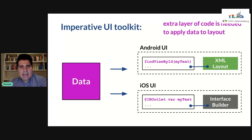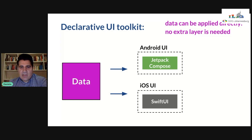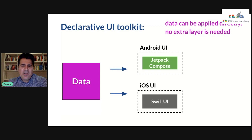In declarative UIs it's very different — you don't have this extra layer of code. In a declarative UI, you have your data and you're able to apply each field of your data object directly to a UI component without using an ID at all. This is really very beneficial for removing a lot of boilerplate code, and also removes lots of bugs at the same time.